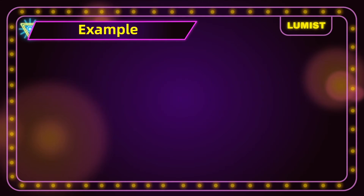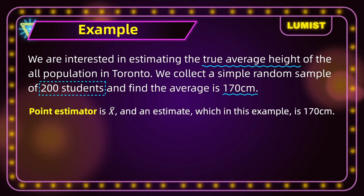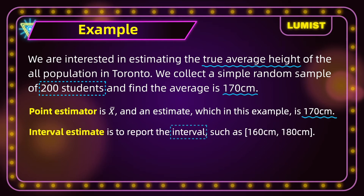Let's try an example to make sure you understand the idea of interval estimation. We're interested in estimating the true average height of all the population in Toronto. We collect a simple random sample of 200 students and find the average is 170 centimeters. The point estimate is x-bar, which is 170 centimeters, while an interval estimate would report a range — for example, 160 centimeters to 180 centimeters.